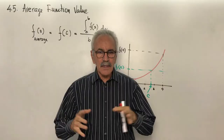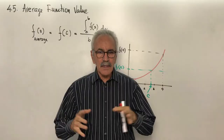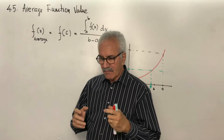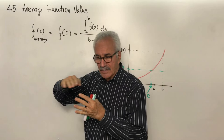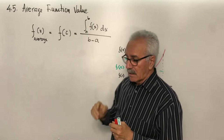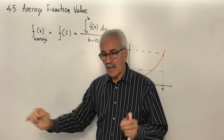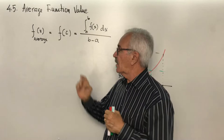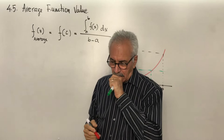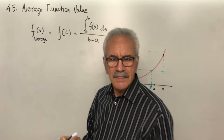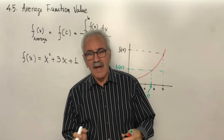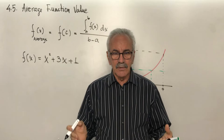Now let's see one example. In calculus, we represent the average function value as follows: the value of the function at the average level equals the integral from the beginning to the end of the interval of f(x), divided by the distance of this interval. Let's solve one example: given f(x) = x² + 3x + 1, find the average value on the interval from 1 to 4. The function is continuous, which is a requirement in order to find the average value.